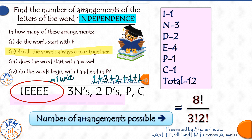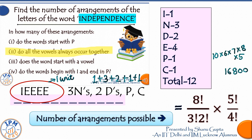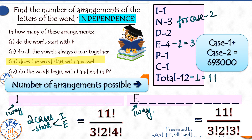But let's not forget that corresponding to each arrangement of the 8 standalone units, the 5 vowels within their group can be arranged in 5!/4! ways (since four of them are E's). So we multiply by this number, and the answer calculates to 16,800.